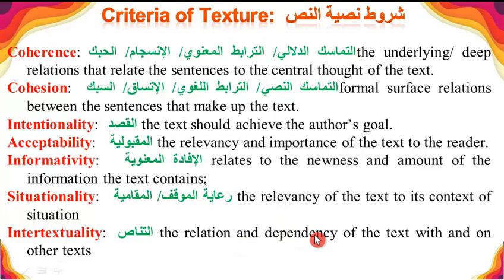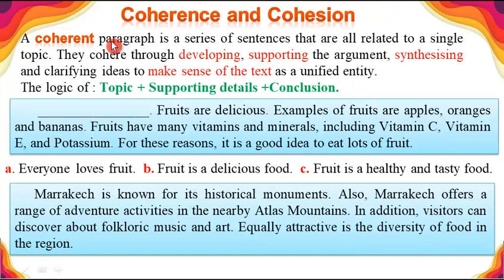The text should provide new information, be relevant to the situation, and may have a relation to or be dependent on other texts. A paragraph in English can be coherent when all the sentences within the paragraph are related to a single topic or idea — they develop, support, synthesize, or clarify the idea, and in this way contribute to the meaning of the text as a unified entity, following the logic of topic sentence, supporting details, and conclusion.